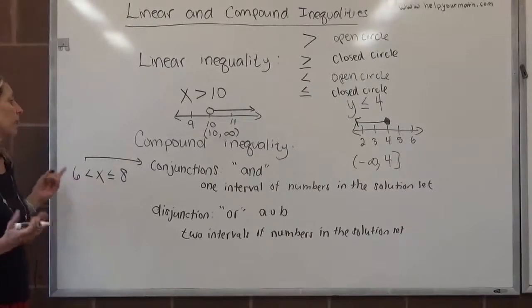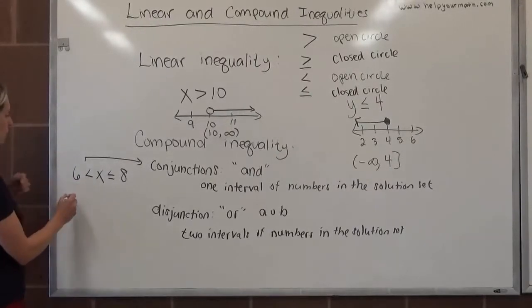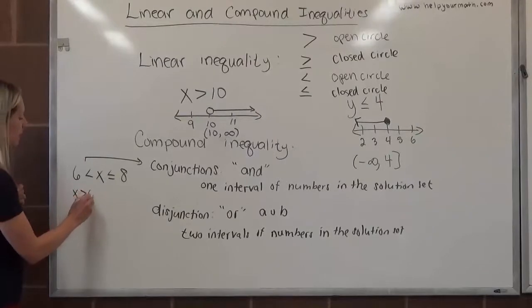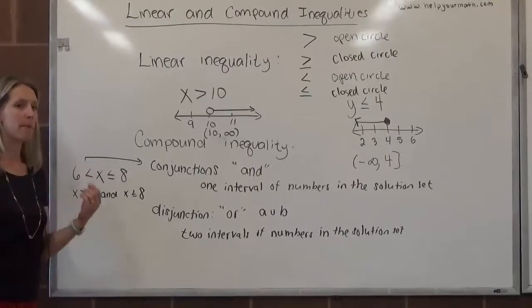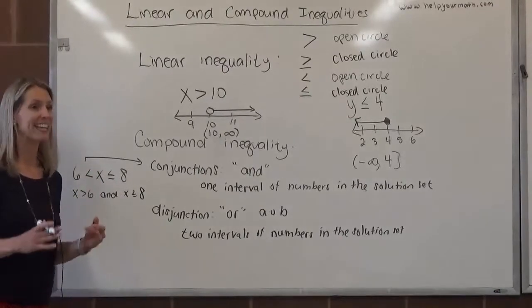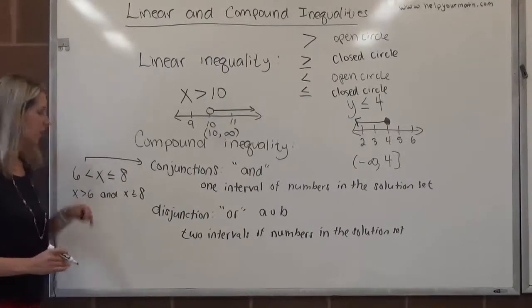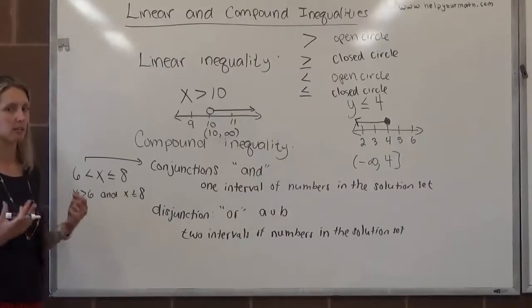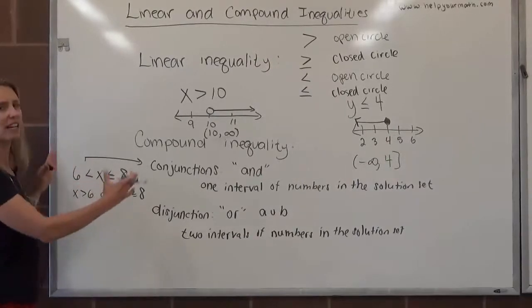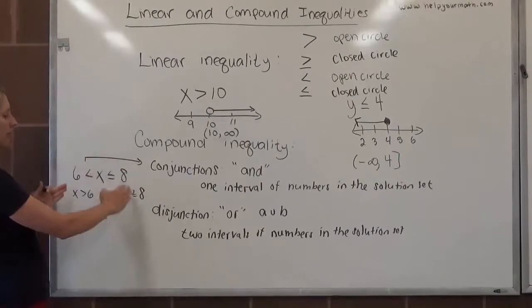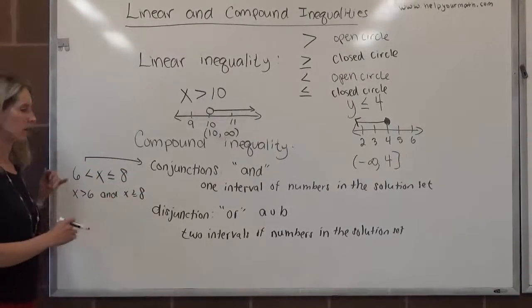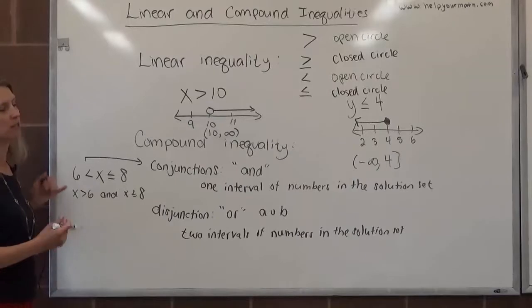You are allowed to split up conjunctions if you want. You could say x is greater than 6 and x is less than or equal to 8. But mathematicians generally want to write the least amount humanly possible, so they're going to stick to this because it's less to write. It helps you write the interval notation. It's just written out for you. The number line matches right up with that. We generally prefer this, but this is also acceptable.